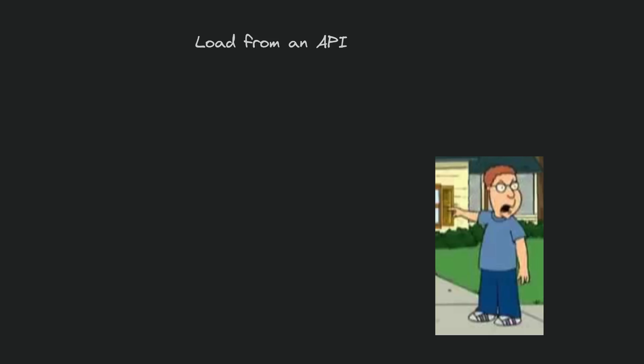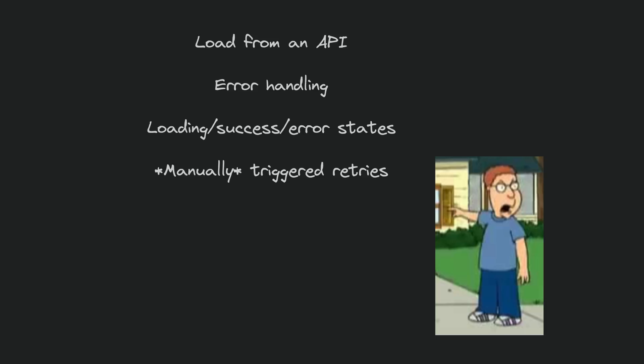Specifically, we are going to create a little app that loads data from an API, handles displaying errors, handles displaying various loading/error/success states, allows for manually triggering retries of failed requests — which is actually harder to do than automatic retries. It will also have paginated data, allow for local filtering of data, and utilize value changes from reactive forms.